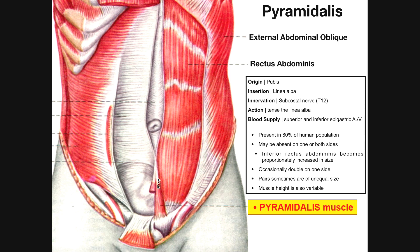Here's the pyramidalis muscle. Of course, this is just one of them. You can see that it's very small and pyramid-shaped. The origin is down here on the pubis, and then the fibers run superiorly and insert on the linea alba. This would be the patient's left pyramidalis muscle.